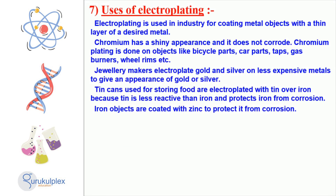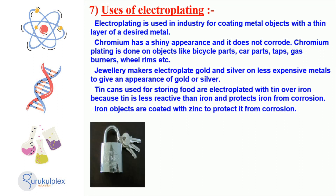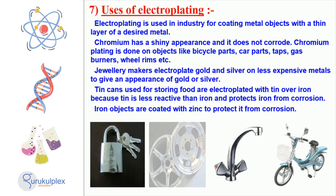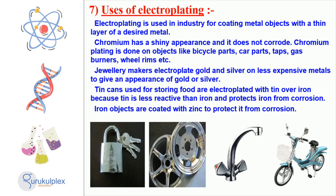Electroplating is a process used widely in industry to coat metal objects with a layer of desired metal. It is used to protect metal objects from corrosion and to give them a shiny and aesthetic look. One common application of this technique is chromium plating, which is used for objects like car and bicycle parts, gas burners, wheel rims, etc.